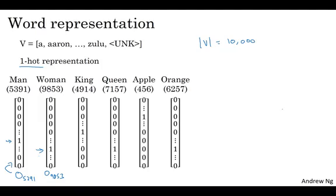One of the weaknesses of this representation is that it treats each word as a thing unto itself, and it doesn't allow an algorithm to easily generalize across words. For example, let's say you have a language model that has learned that when you see 'I want a glass of orange blank,' well, what do you think the next word will be? Very likely to be juice.